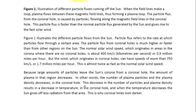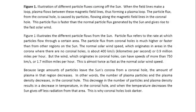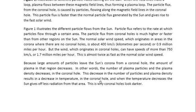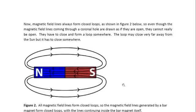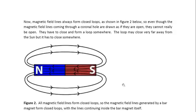Now, because large amounts of particles leave the Sun's corona from a coronal hole, the amount of plasma in that region decreases. And that leads to a lower density in the coronal hole, and therefore a lower temperature, which causes the coronal holes to look a lot darker.